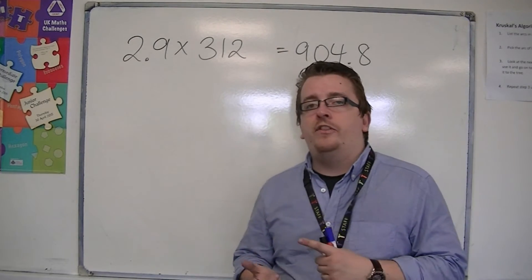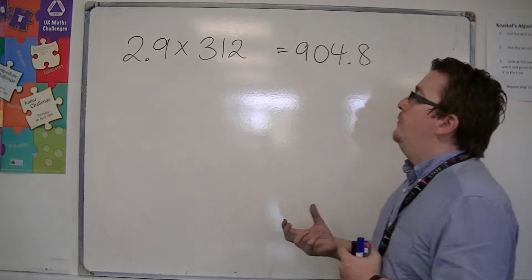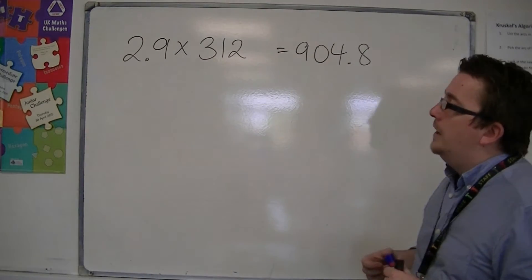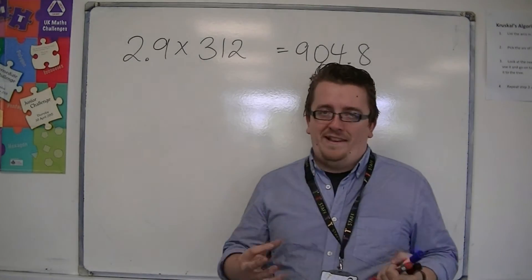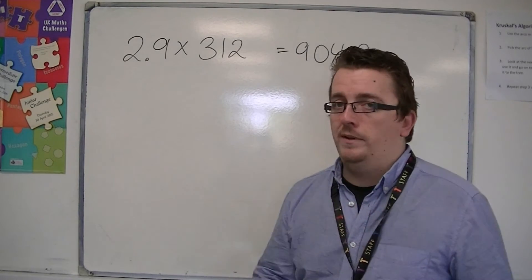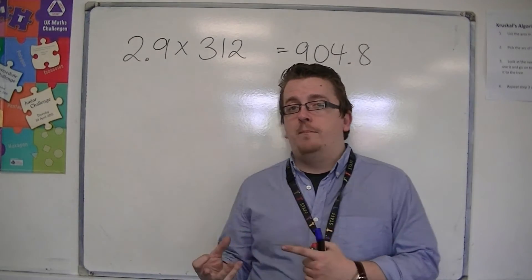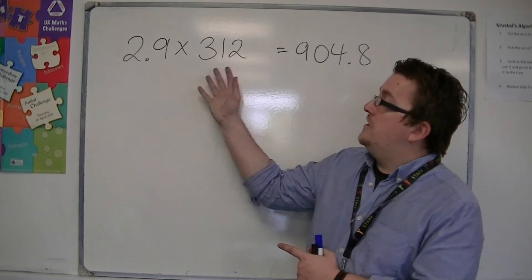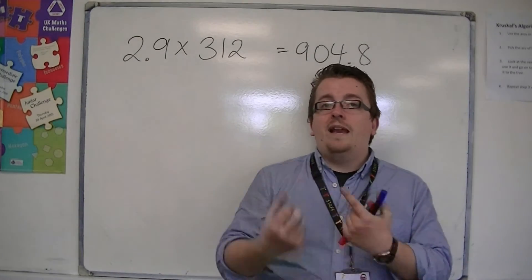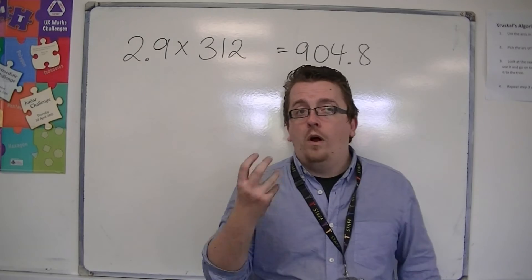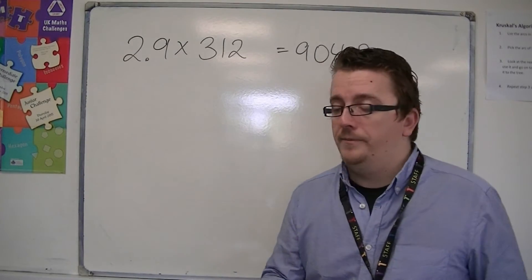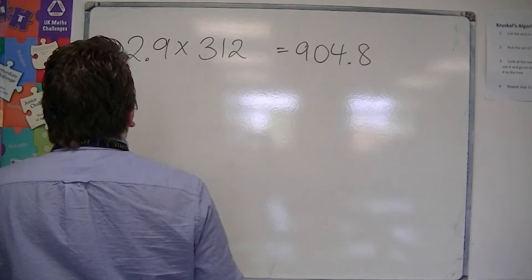So the idea here is that if I was going to do 2.9 times 312, could I get a reasonable estimate of what my answer should probably look like by just rounding these numbers and then doing a simpler calculation, one that preferably I could do in my head. So this is the idea of estimation.